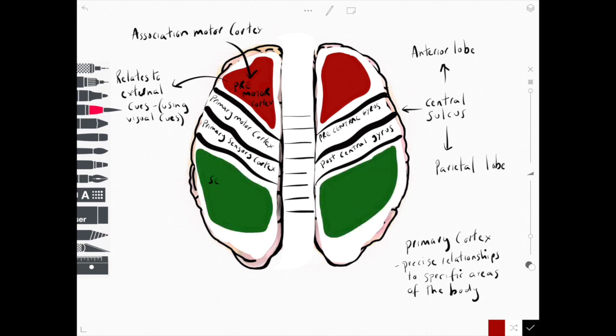The sensory association cortex is involved in integrating sensory information with the information that's being processed in real time by the primary sensory cortex.